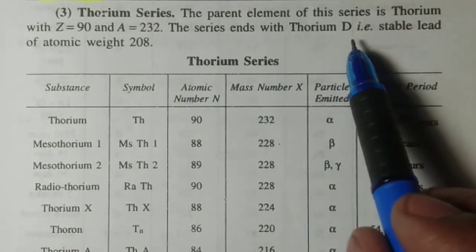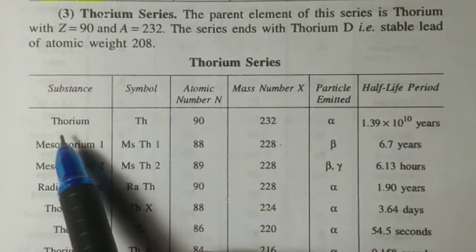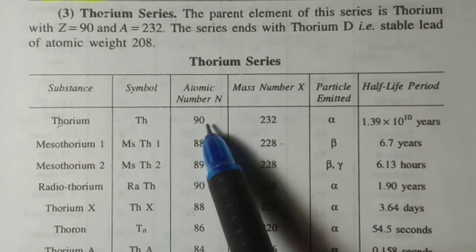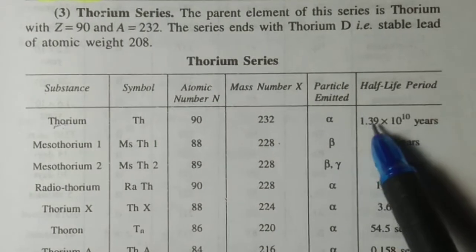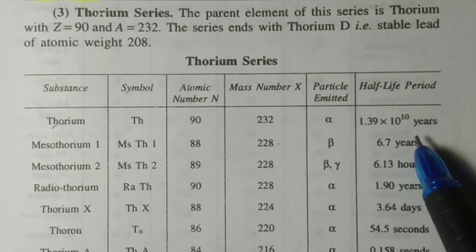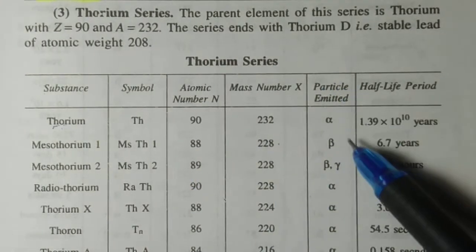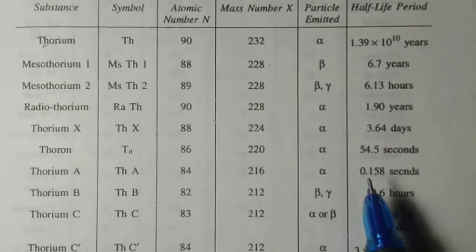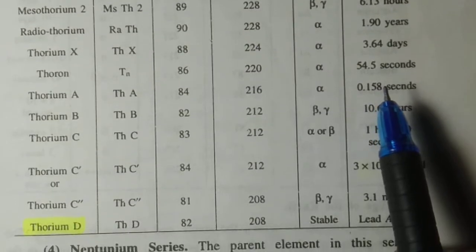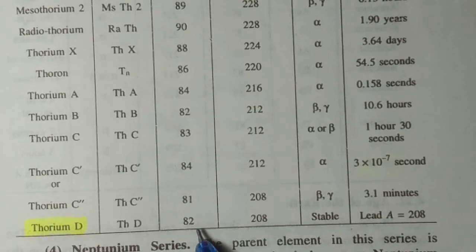The thorium series ends with thorium D, which is stable lead of atomic weight 208. The parent atom thorium has atomic number 90 and mass number 232, particle emitted is alpha, and the half-life period is 1.39 into 10 power 10 years. The series ends with thorium D with atomic number 82 and mass number 208.